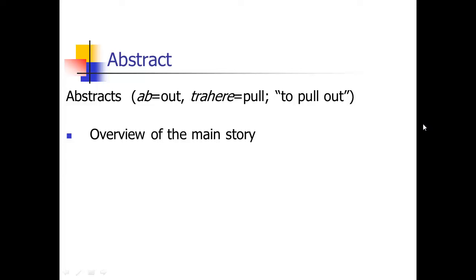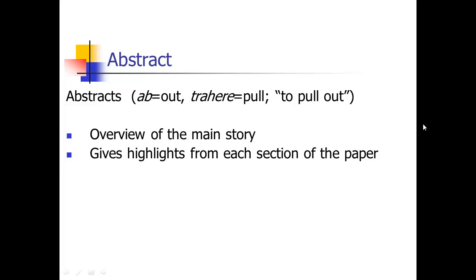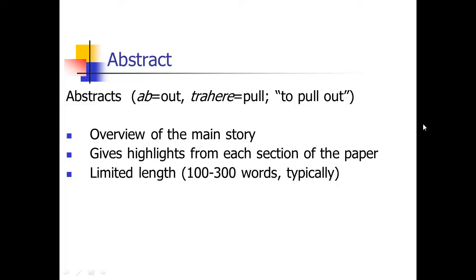What does the abstract do? It gives you an overview of the main story of your paper. It's what a lot of people will read, so you need to get all the key points in there. It highlights something from each section of the paper, and it's usually of a limited length — sometimes 100 to 300 words. This is a great place to use your skills at cutting clutter to fit the really key information into that small word count.